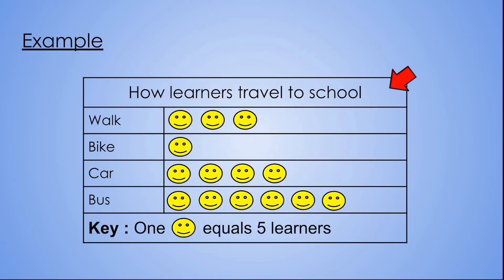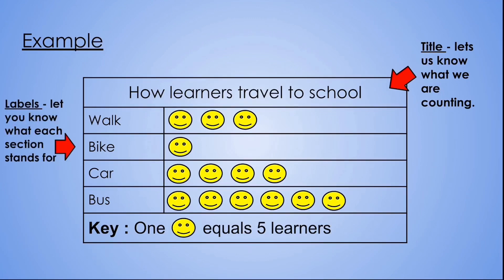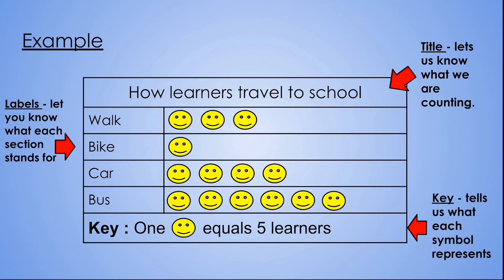Now a picture graph always has a title. The title lets us know what we are counting. A picture graph also always has labels. Labels let you know what each section stands for. A picture graph always has a key. Now a key tells us what each symbol represents.